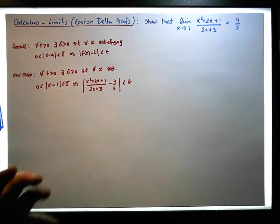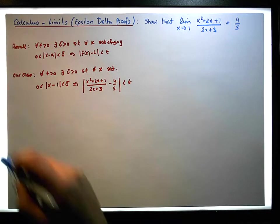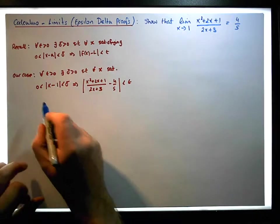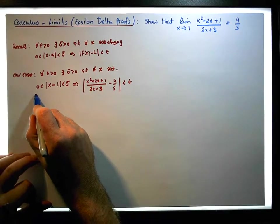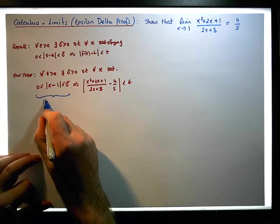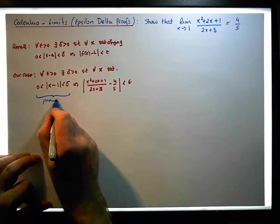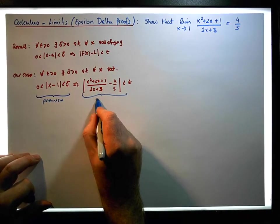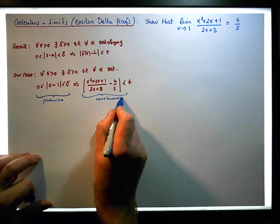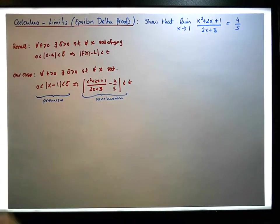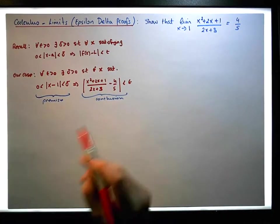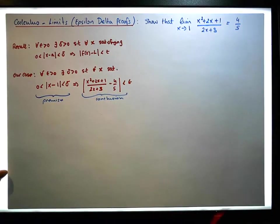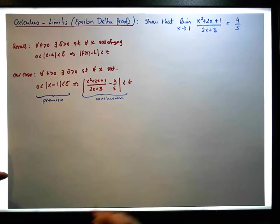So we need to find this delta. We have our premise and our conclusion. What we're going to do is start with the conclusion and try to find an appropriate delta — that's the usual attack strategy in these particular situations.